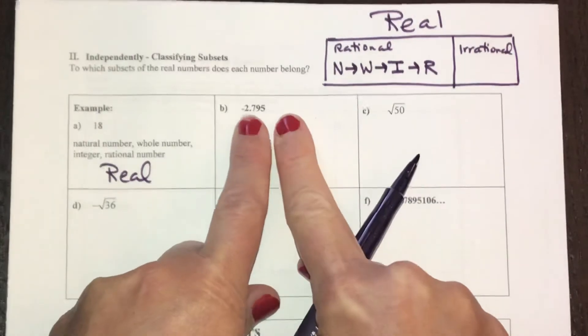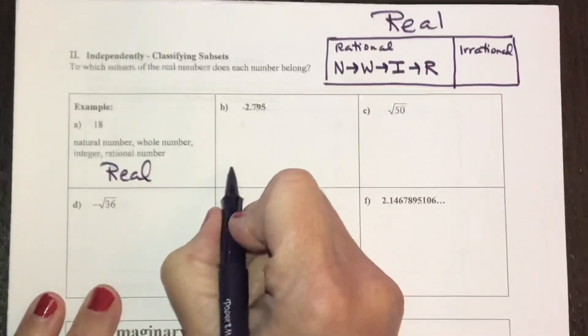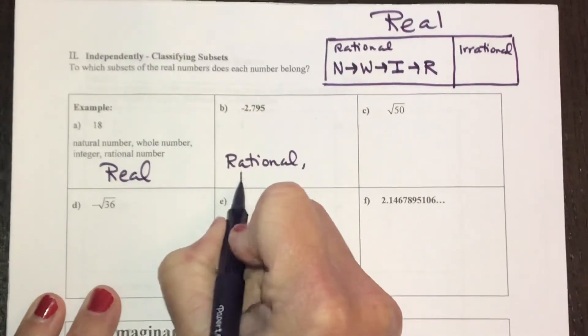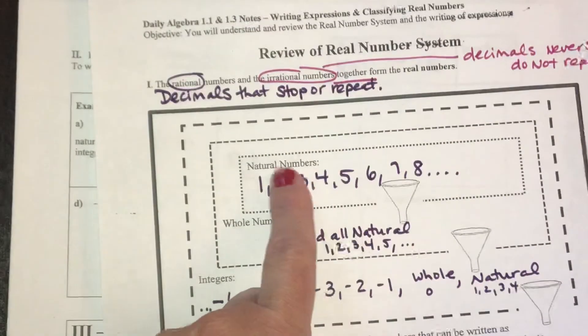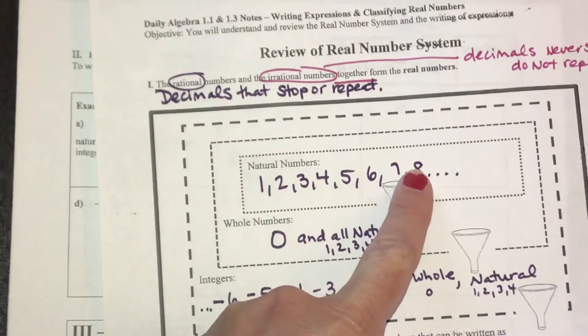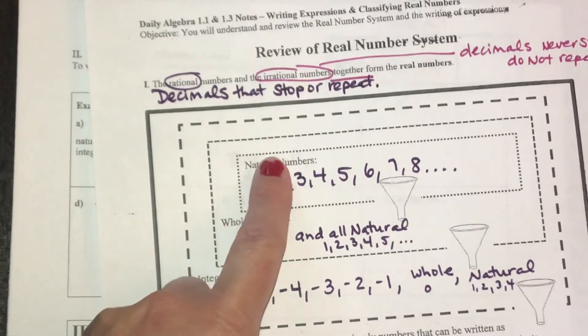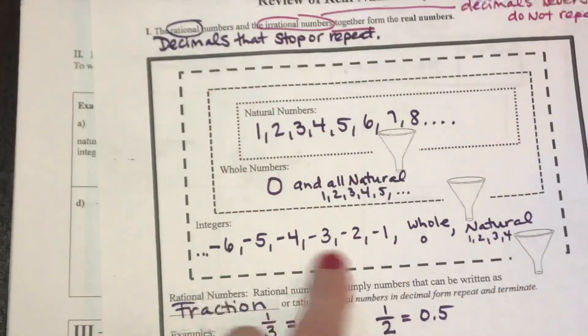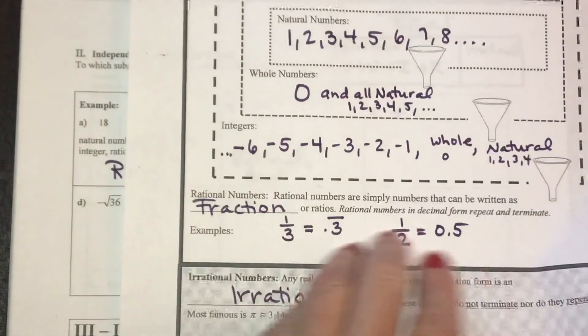This number, the decimal stops, so it would be considered rational. It would also be considered real. Because there is a decimal, I cannot classify it as natural because those are only whole numbers, one or bigger, natural numbers. Whole numbers start at zero and go up. Integers have the negatives or zero or positive, but only the fractions where the decimals stop or repeat would be just rational.